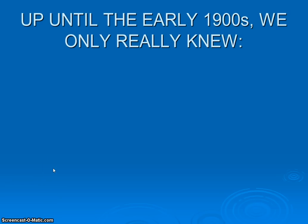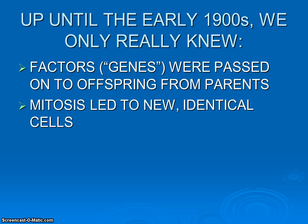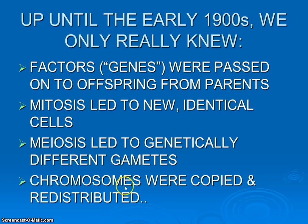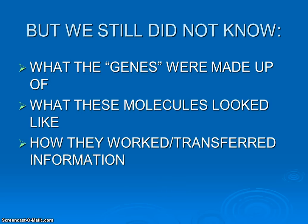Let's put ourselves in perspective right after Mendel and some of the other scientists we'll be learning about later on. In the early 1900s, what did we know? We know that there are these factors called genes that get passed on to offspring from their parents. We know that cells divide and have to copy some kind of information and pass it on to subsequent cells. And meiosis leads to sperm and eggs — gametes that are genetically not identical. We also knew that there were these things called chromosomes that get copied and moved around, but it still leaves us with the question: what are these genes actually?